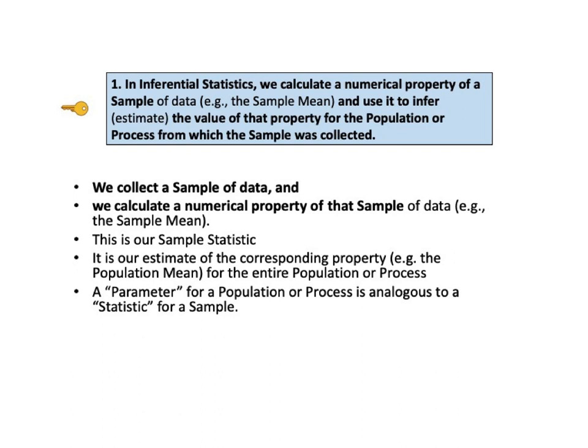These sample properties are called statistics. For every population or process parameter, there is a corresponding sample statistic. In inferential statistics, the value of the sample statistic — for example, the sample mean — becomes our estimate, that is, our inference, of the value of its corresponding population or process parameter — in this case, the population mean.